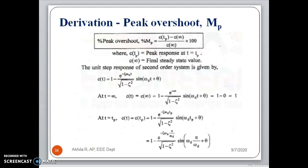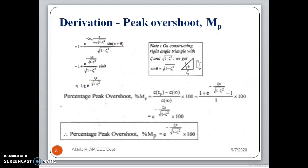The next derivation is for peak overshoot: Mp = [C(Tp) - C(∞)] / C(∞) times 100. Substituting T equal to infinity, C(∞) = 1 since the exponential term goes to zero. Substituting Tp = pi / omega_D, after rearrangement the expression becomes 1 plus e raised to minus zeta*pi divided by sqrt(1 - zeta squared). After cancellation, the final expression for percentage overshoot is e raised to [minus zeta*pi / sqrt(1 - zeta squared)] times 100.